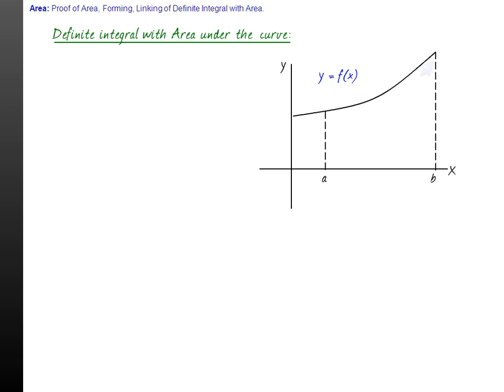Now suppose there is a point M at a distance x from origin and a neighboring point N at a distance x plus delta x from origin, and draw the ordinates at M and N.